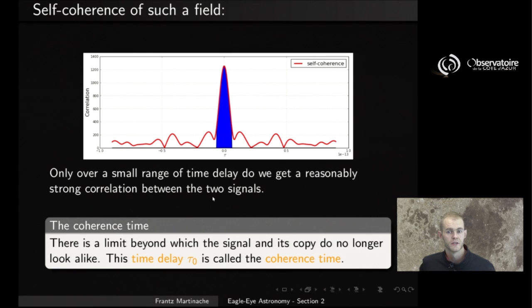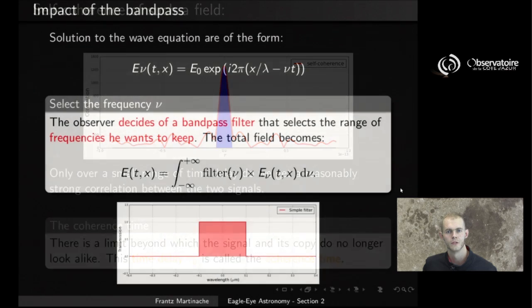So what we see is that there is a limit beyond which the signal and its delayed copy do no longer look alike. That time delay, which we note tau_0, just to use a notation here, is something we call the coherence time. It's something that we're going to find later again in our description of those phenomena.